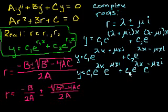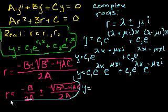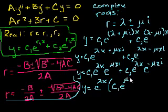And let's see, we have an e^(λx) in both of these terms, so we can factor it out. So we get y = e^(λx) times [c1e^(μxi) + c2e^(-μxi)]. Let me draw a line here. I don't want you to get confused with all this quadratic equation stuff.